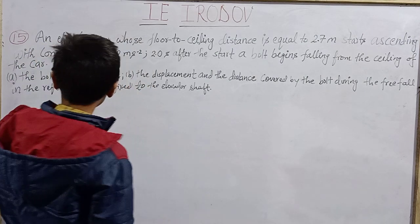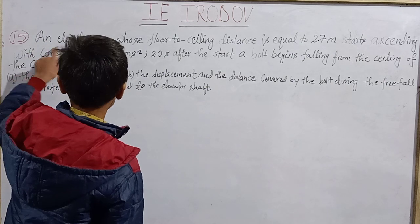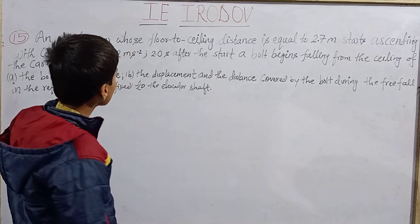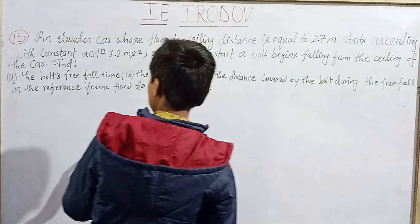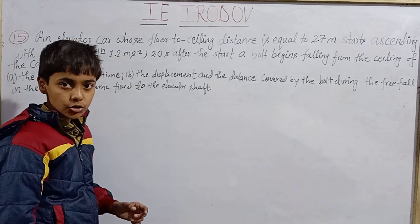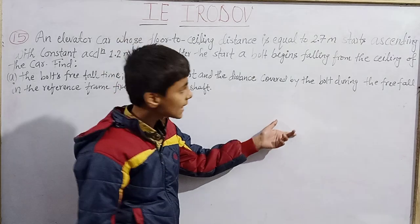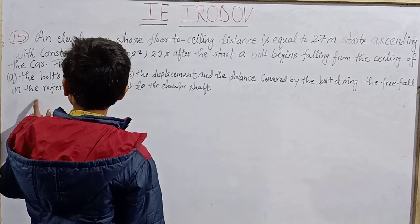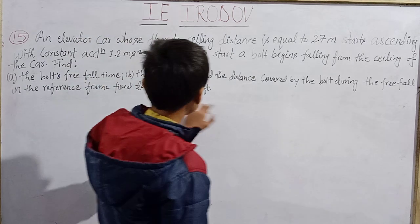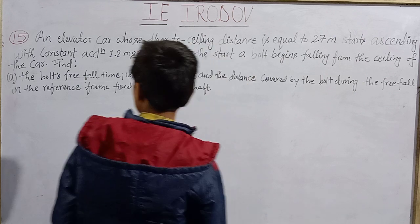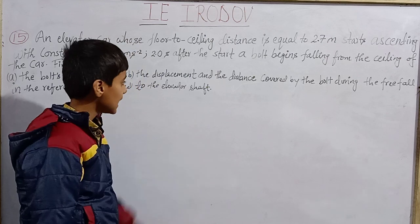Here is the question we are going to solve in this video — Irodov problem 15 from exercise. An elevator car whose floor-to-ceiling distance is equal to 2.7 meters starts ascending with constant acceleration 1.2 meters per second squared. Two seconds after the start, a bolt begins falling from the ceiling of the car. Find the bolt's free fall time — Part A. Part B is the displacement and distance covered by the bolt during the free fall time in the reference frame fixed to the elevator shaft.